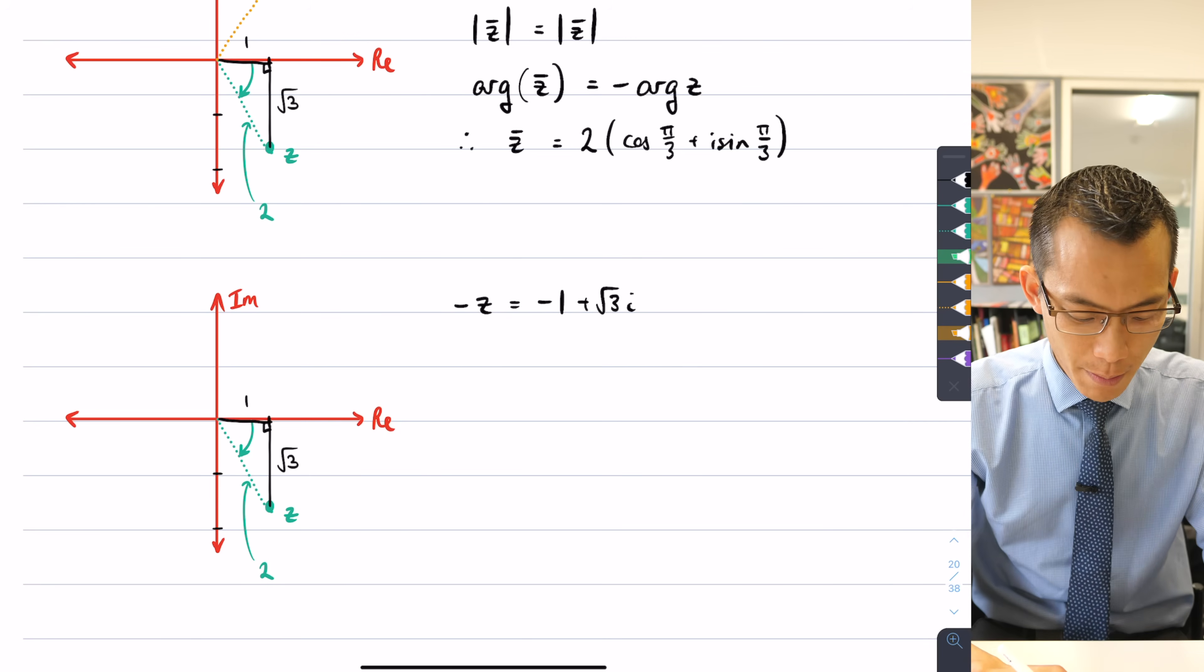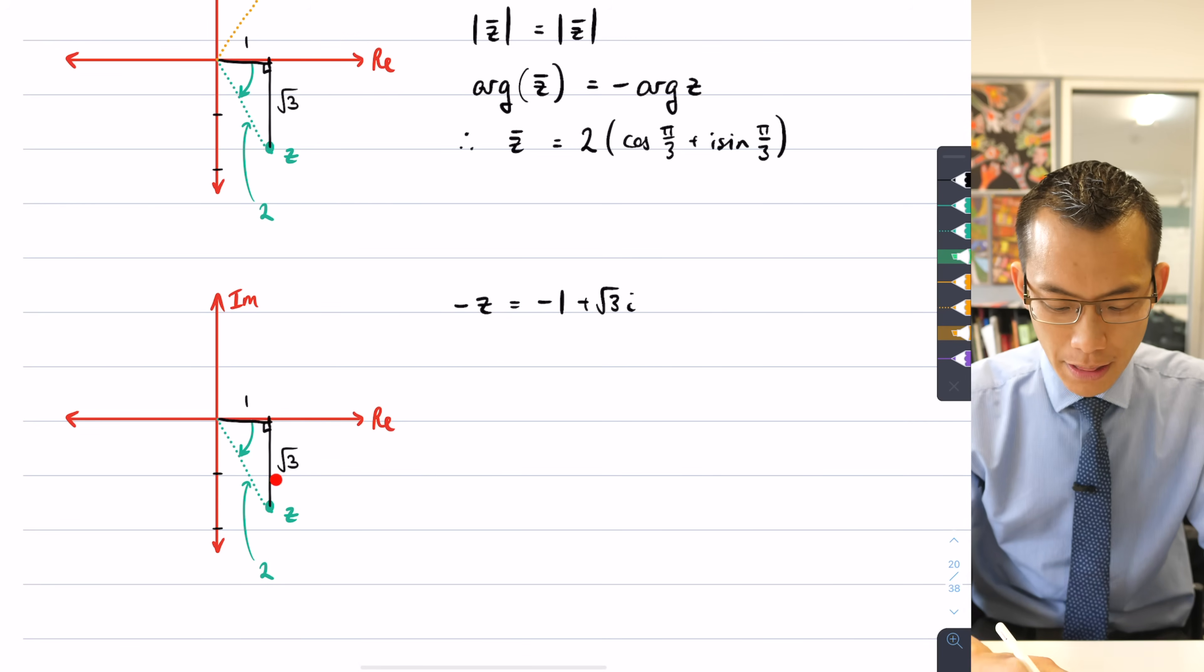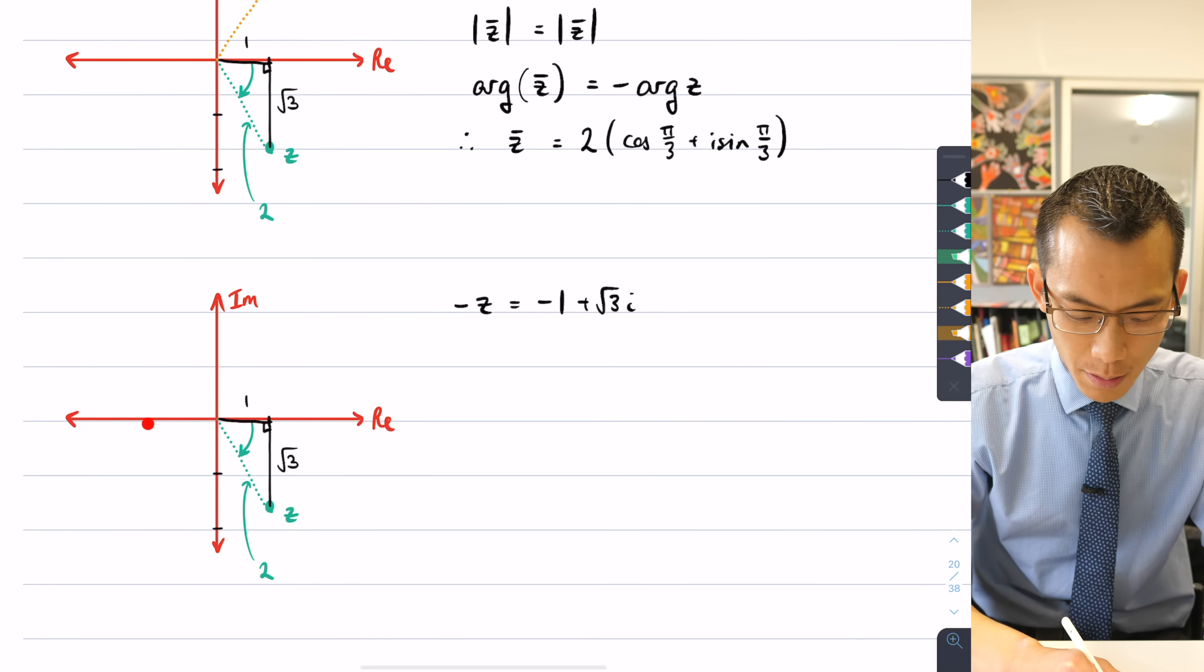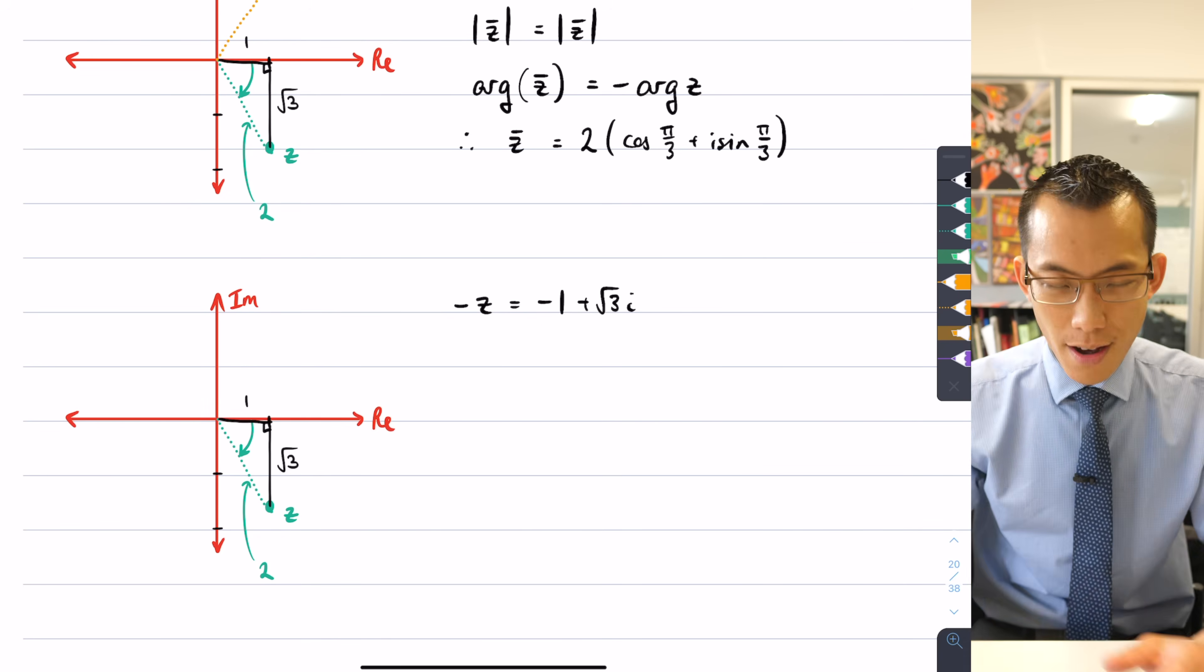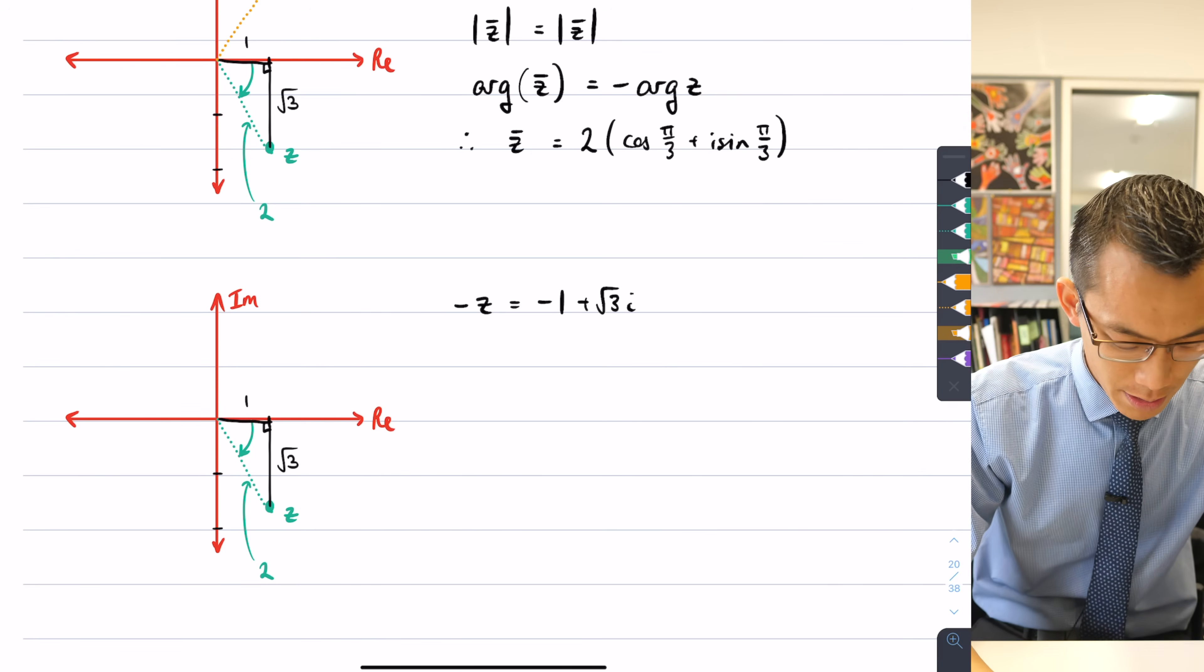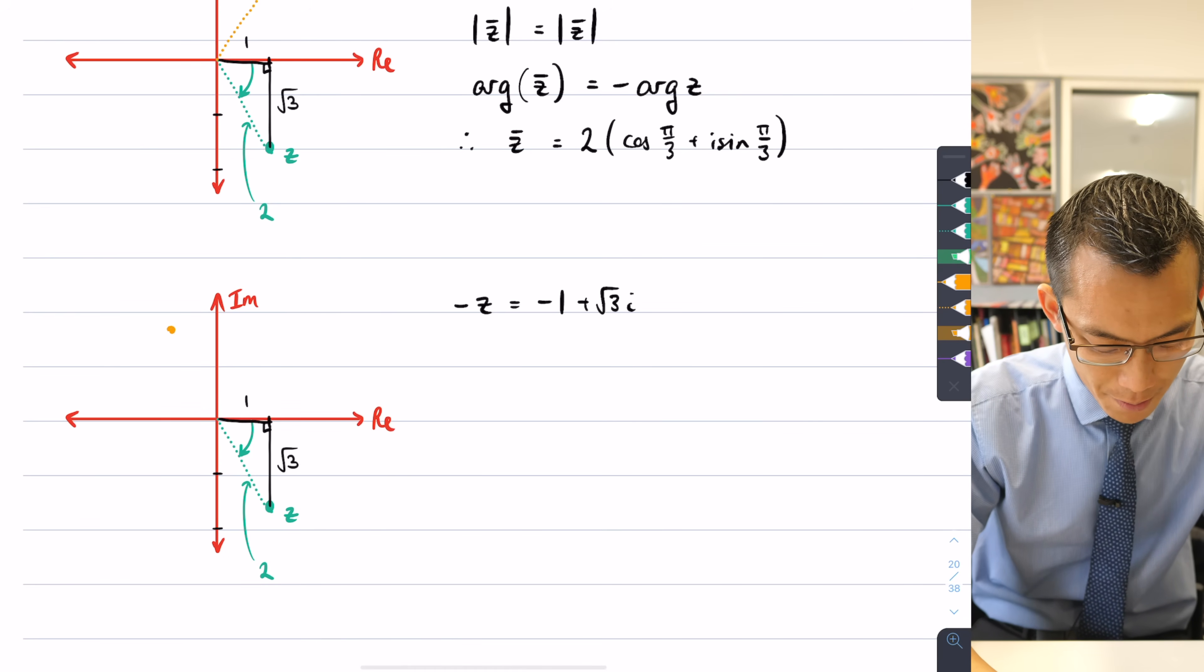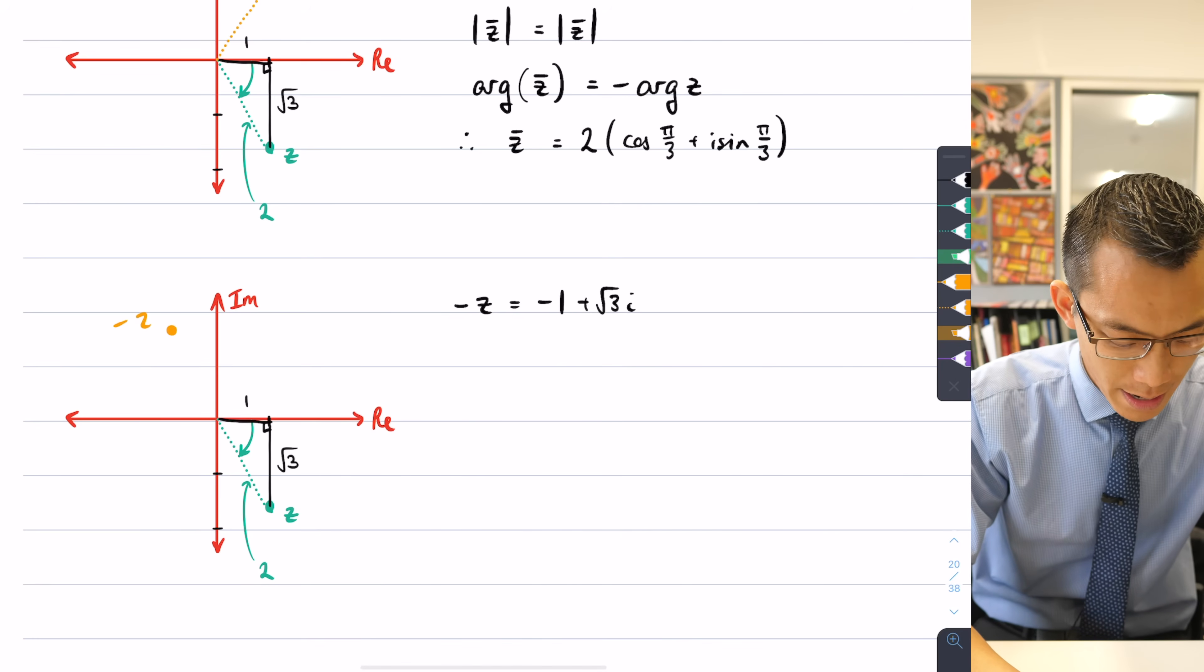So where's that going to go? Well, our original number was down here in the fourth quadrant, but this number here, you're going to go to the left, so I'm going that way, and then I'm going to go up √3i. So you can see I'm on the opposite side rotationally, right?